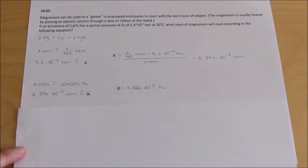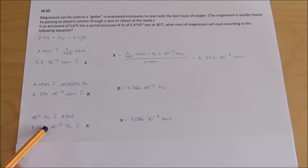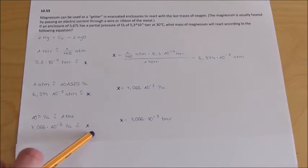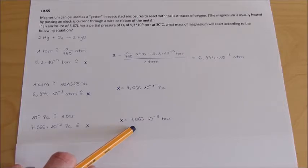In the following, we have to calculate the bar unit. 10^5 Pascal equals 1 bar. 7.066 × 10^-3 Pascal equals X. X equals 7.066 × 10^-8 bar.